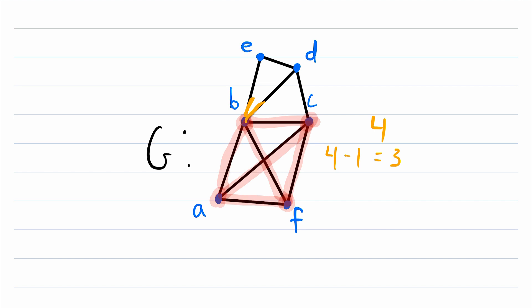We see that B has a degree of five, C has a degree of four, but then A has degree three. If we were to continue looking, we'd also see that F has degree three. But for this test, we only need to find one vertex with that minimum degree. Since at least one vertex in this clique has that minimum degree, we know that it's a maximal clique.